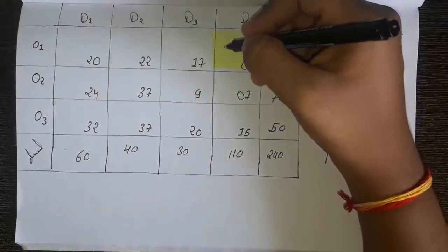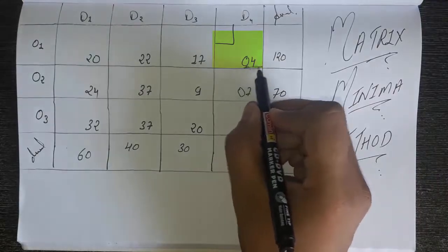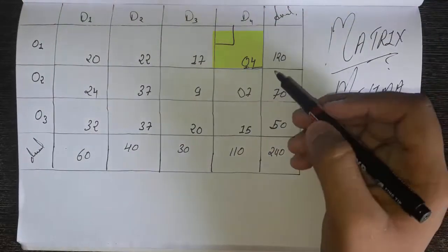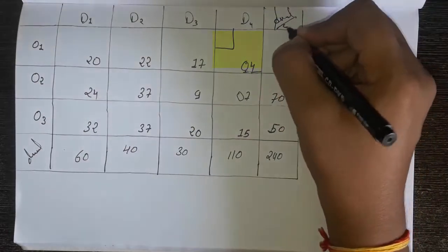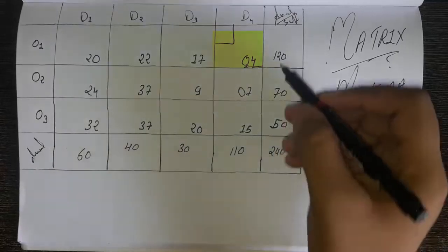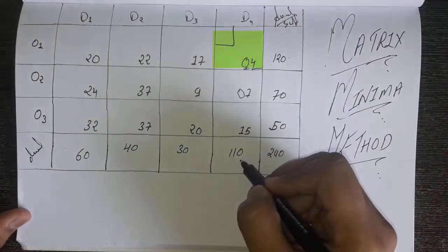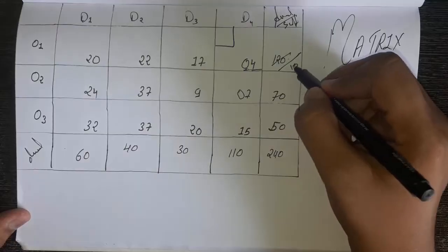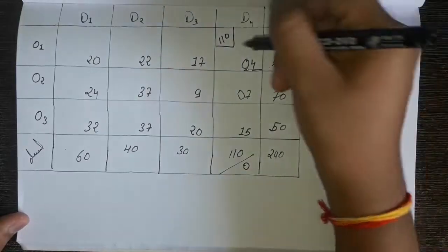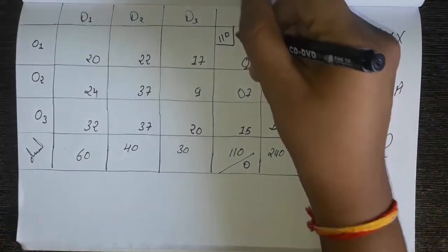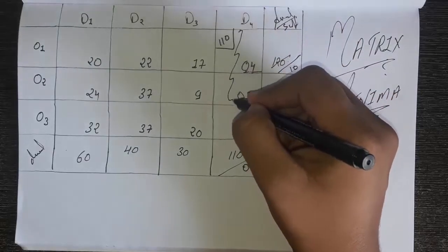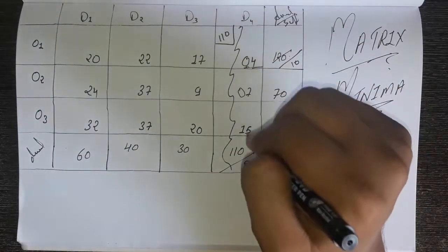The smallest number is 4. Just like in the northwest corner method, make a box here. Since this is the smallest number, check the demand and supply for this cell. The supply (availability) is 120 and the demand is 110. Subtract: 120 minus 110 gives 10. So 120 becomes 10 and the demand becomes 0. Write the difference here — 110 and the remainder 10. Now this column gets eliminated, so I'll make a line through it.